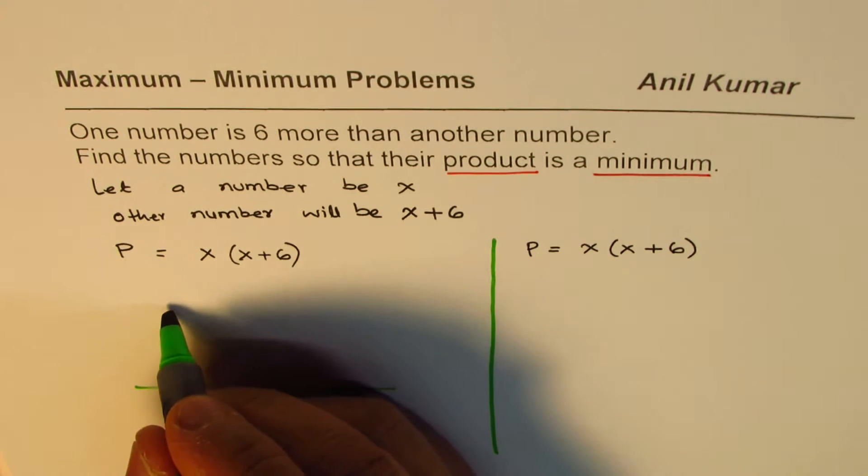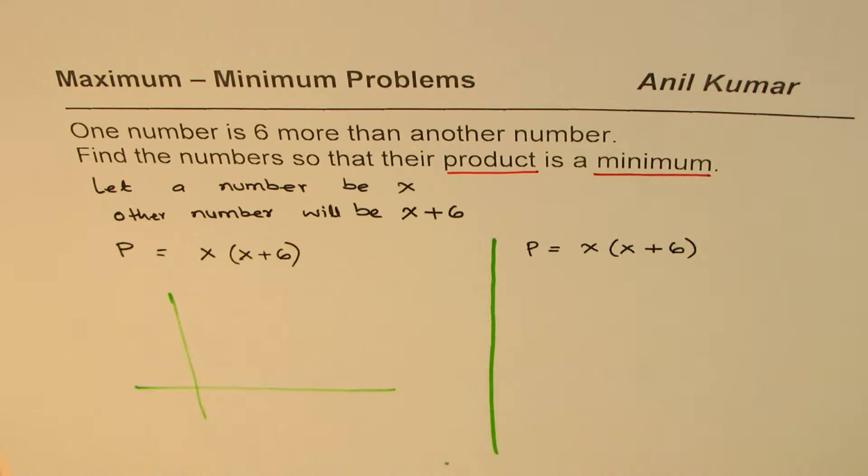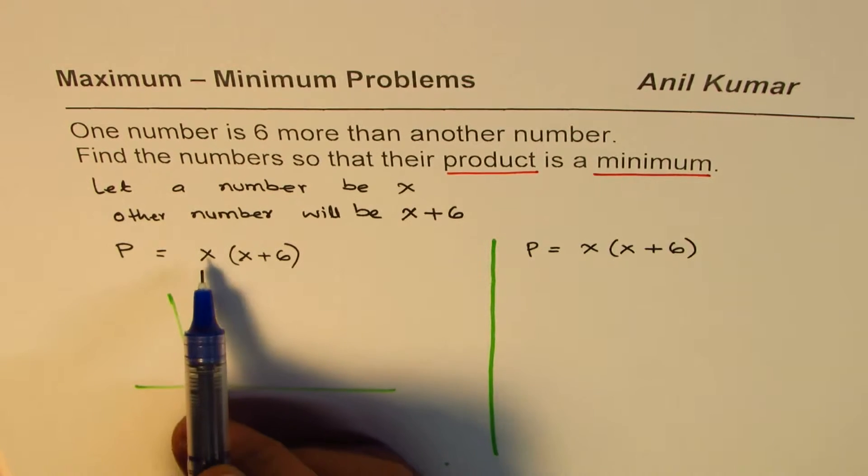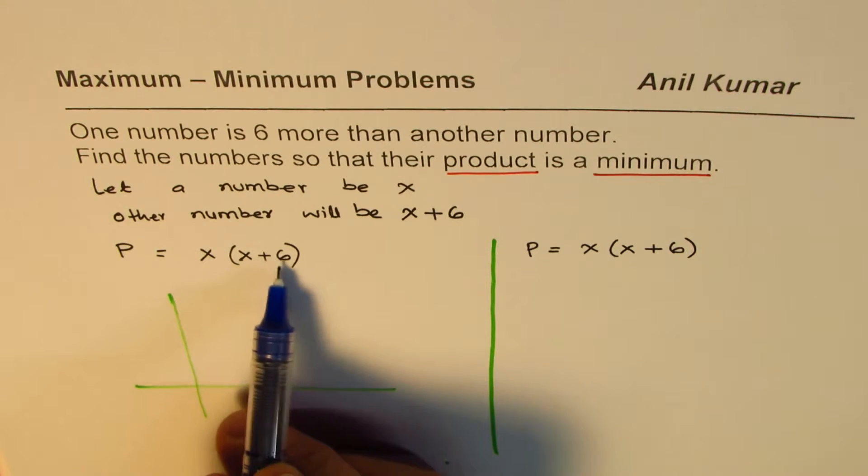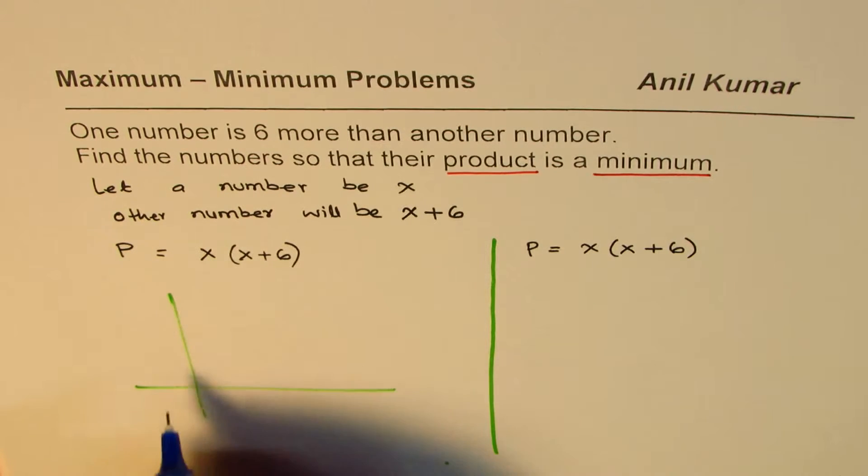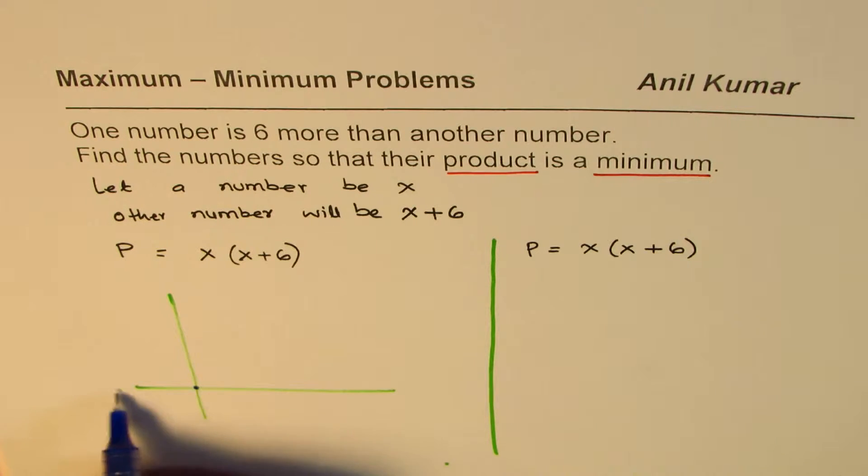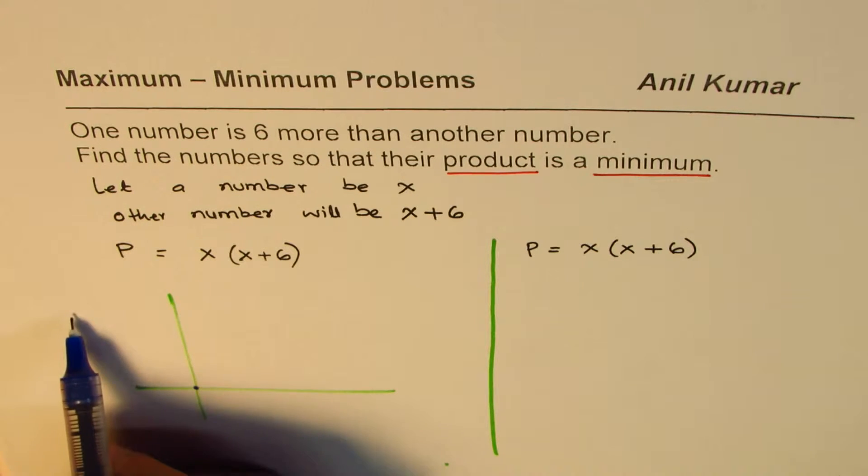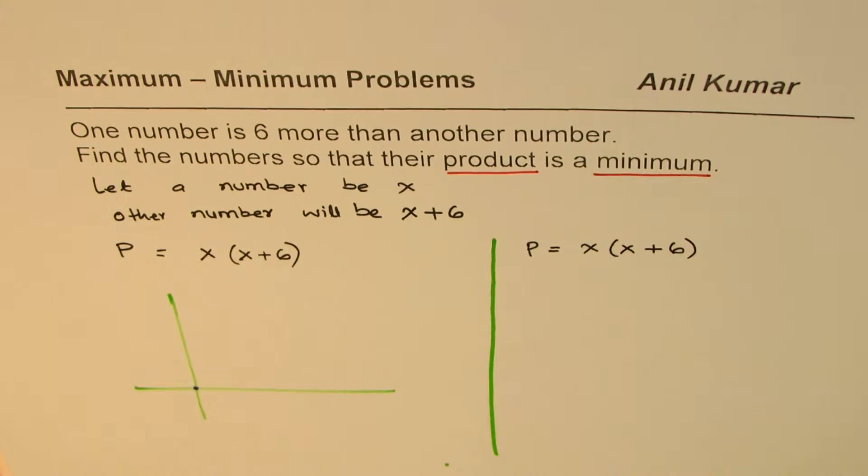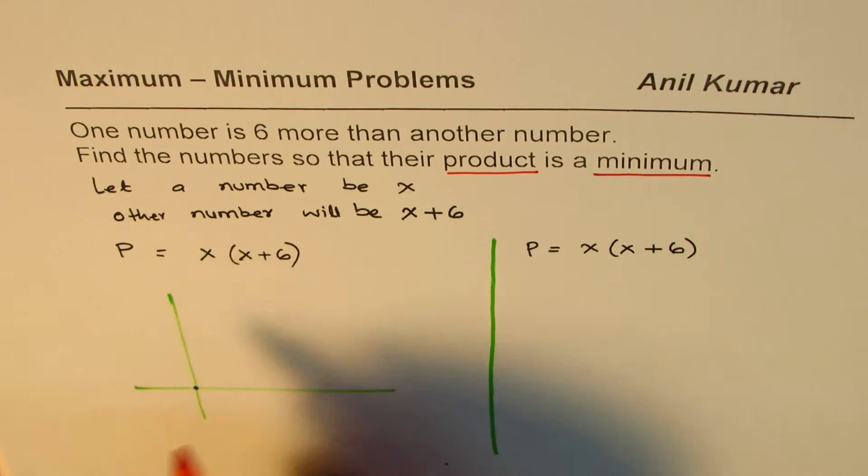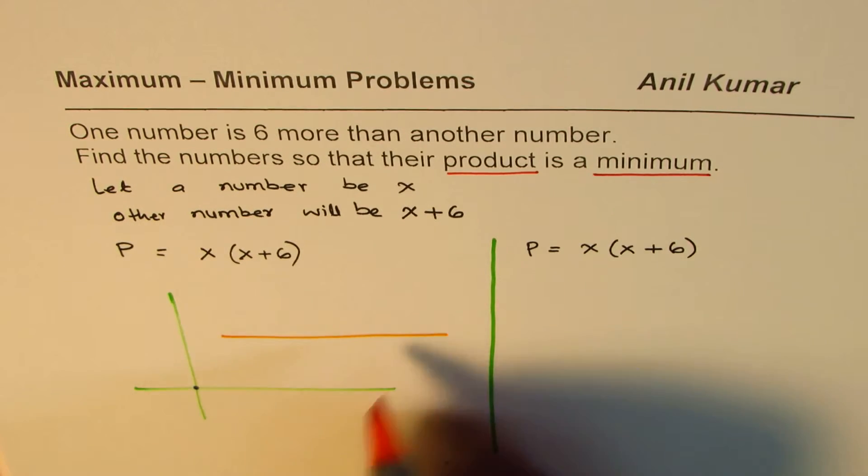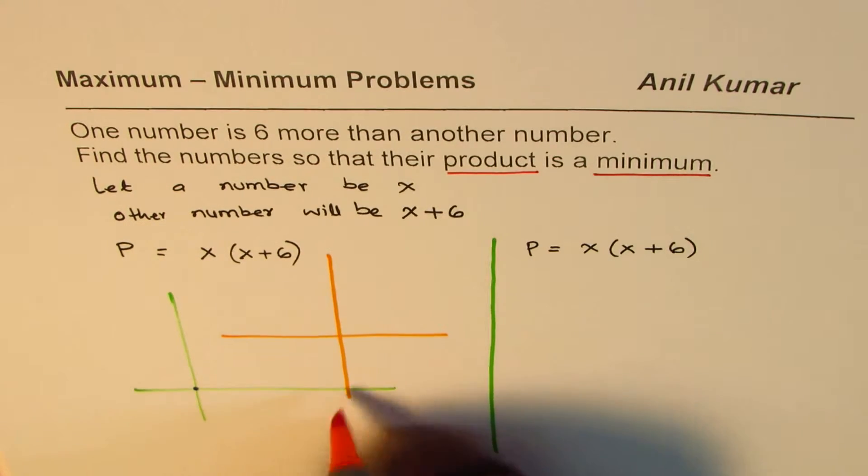So what we will do here is we'll kind of sketch it. So what we are saying here is that we have X times X plus six. When is this zero? This is zero at X equals to zero. When is this factor zero? Well, this factor is zero at minus six. Oh, so I should have drawn it on the other side. That's fine. So let me redo it. I didn't realize this was minus six, so let's redo it.